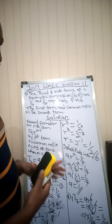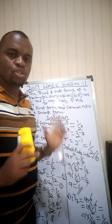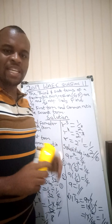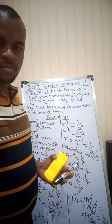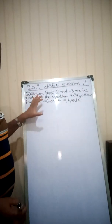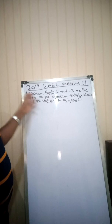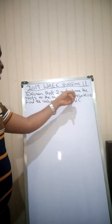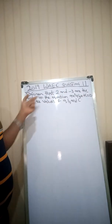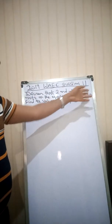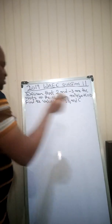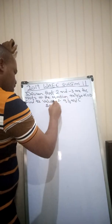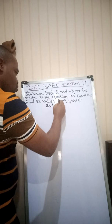We've succeeded in solving the 'a' part of the question. Now we'll be looking at the 'b' part. The b part says: given that 2 and -3 are the roots of the equation ax² + bx + c = 0, find the values of a, b, and c. I'll give you the sharpest solution to this.